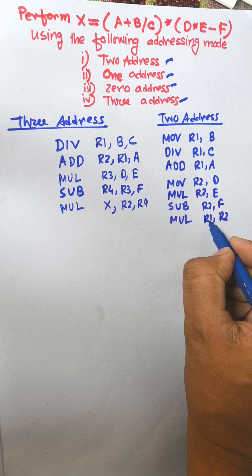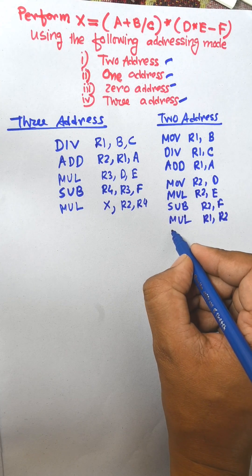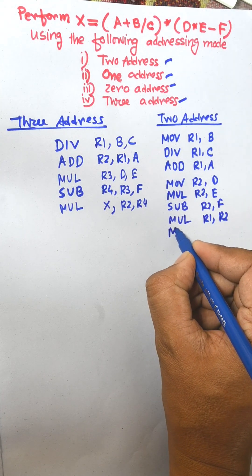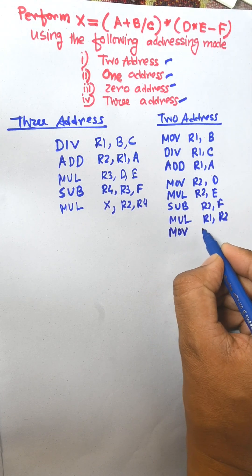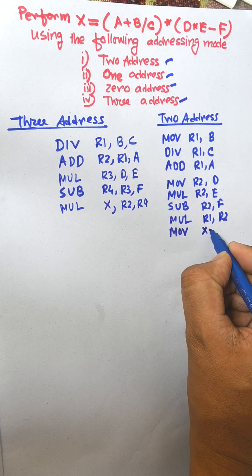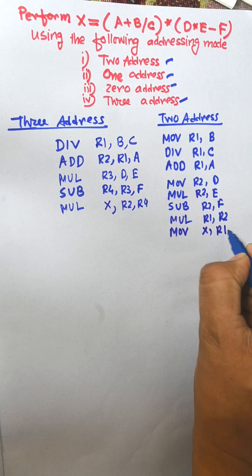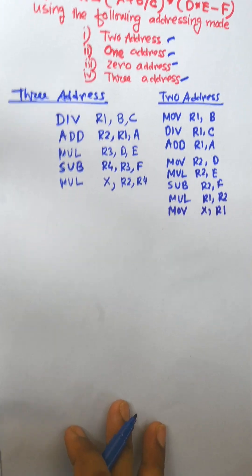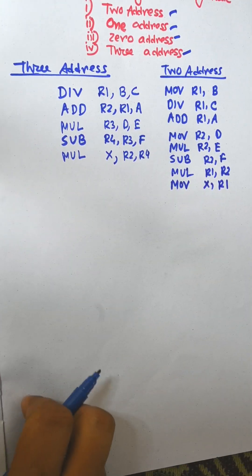R1 and R2 are multiplied and the result is transferred to X. This is known as two-address instruction format.